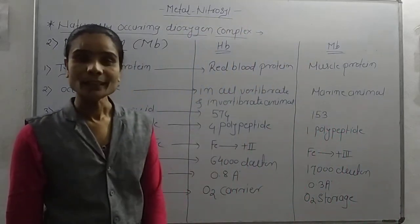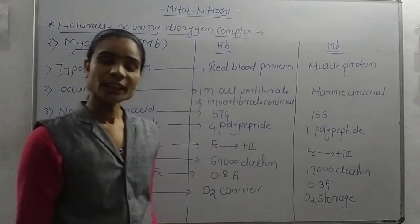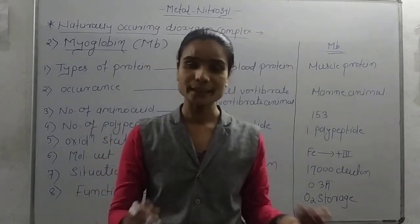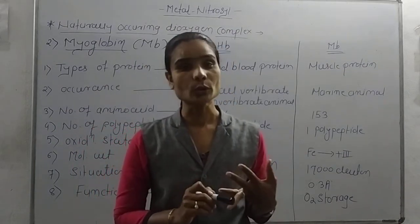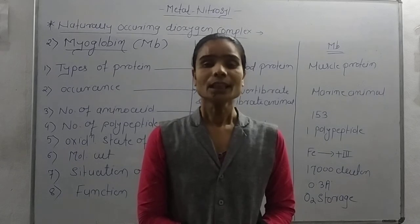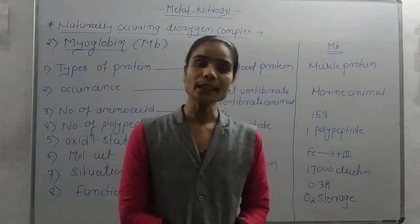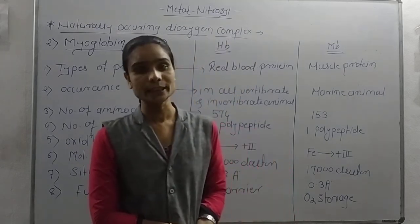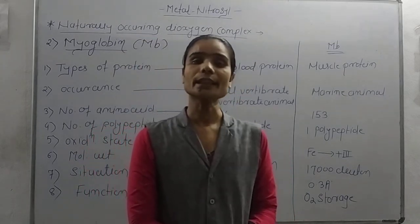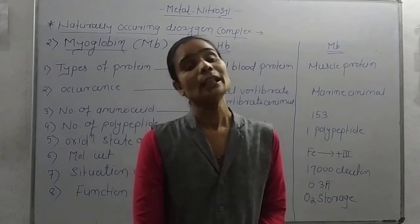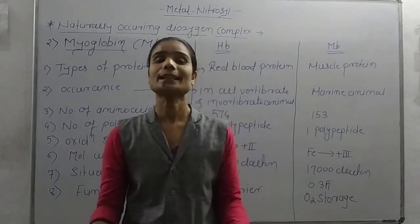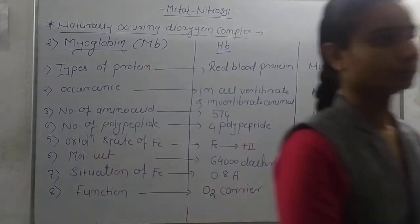So these are the main naturally occurring dioxygen complexes — hemoglobin and myoglobin. In the next lecture, we will cover hemerythrin and hemocyanin, which also act as naturally occurring dioxygen complexes. Thank you so much for watching.